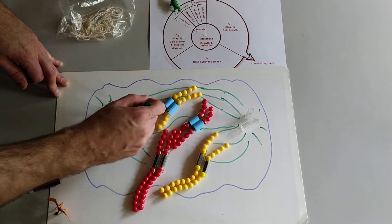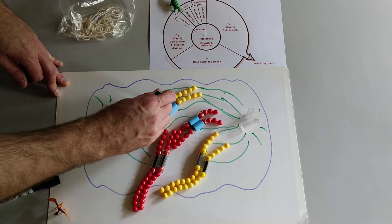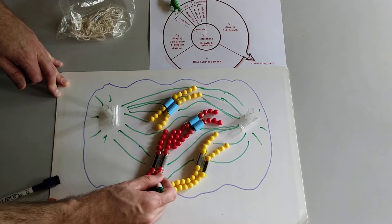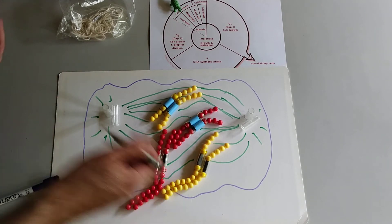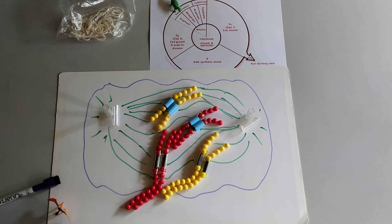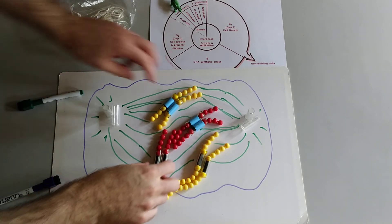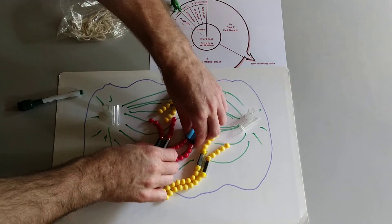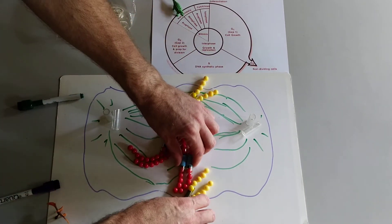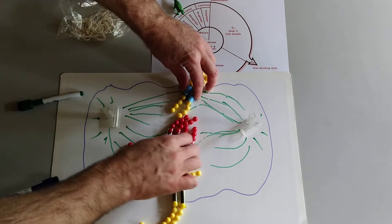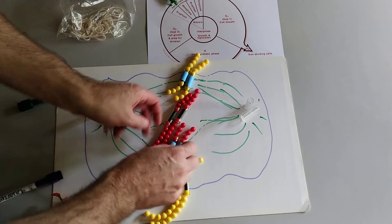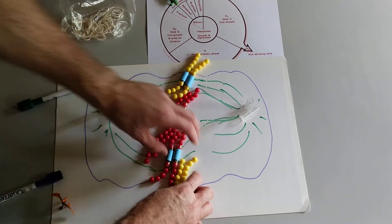Spindle fibers are attached to each centromere. And then they start moving around. And the chromosomes start moving around until they end up along the equator of the cell. It occurs to me I need more room here, but that's okay. Imagine this is still all inside the cell.